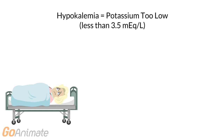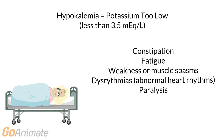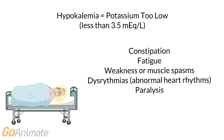Hypokalemia occurs when plasma potassium is less than 3.5 milliequivalents per liter. Hypokalemia can be caused by kidney disease, diabetes, ketoacidosis, vomiting and diarrhea, extreme alcohol use, and some diuretics.